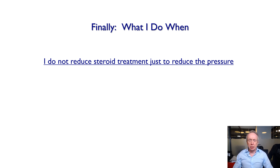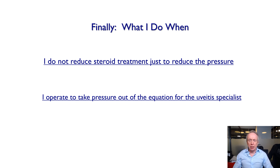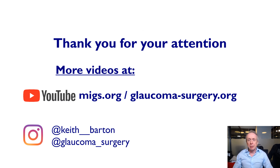Finally, two take-home points. I do not reduce steroid treatment just to reduce the pressure; instead I operate to take pressure out of the equation for the uveitis specialist. In advanced uveitic glaucoma this needs to be more definitive, so it's more often tubes and trabeculectomies — trabeculectomies when there are no risk factors for failure apart from the uveitis, and tubes depending on the type of uveitis, whether that's a Baerveldt 350 right down to a single-plate Molteno. Thank you very much for your attention and for the kind invitation to speak.